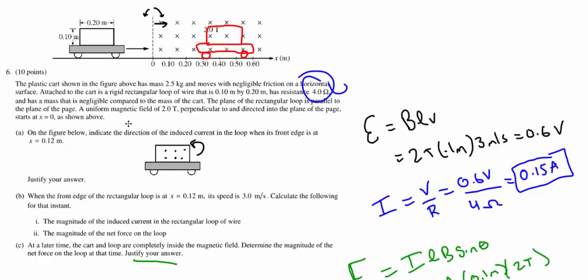So that is the answer. That is legitimate justification as well. You might want to toss in an equation in there, but really, ultimately, you need to directly state there is no changing magnetic flux, thus there is no induced current, thus there is no force acting on it, because the current is zero. All right, that's it for number six. Thank you.